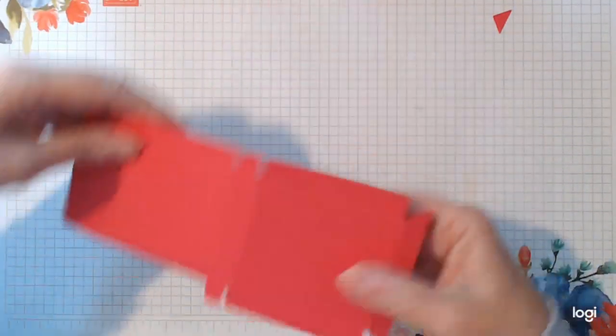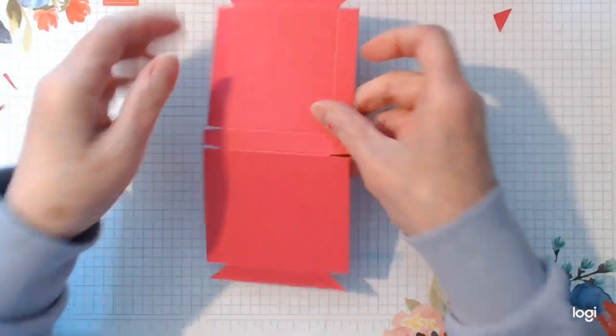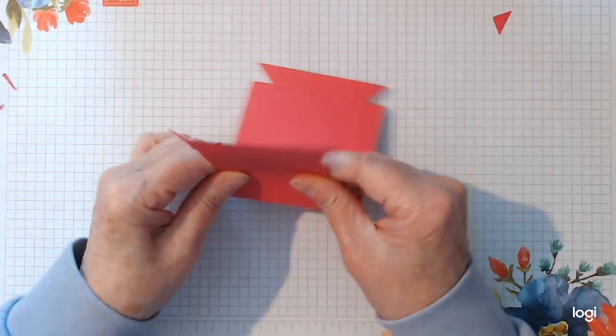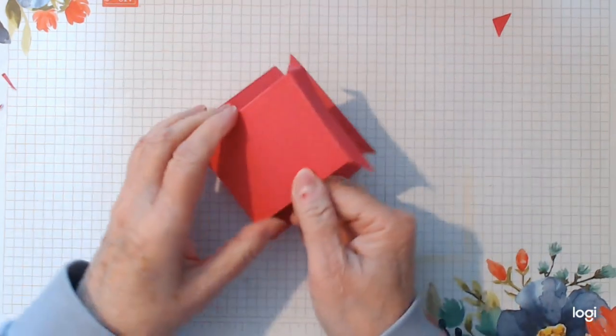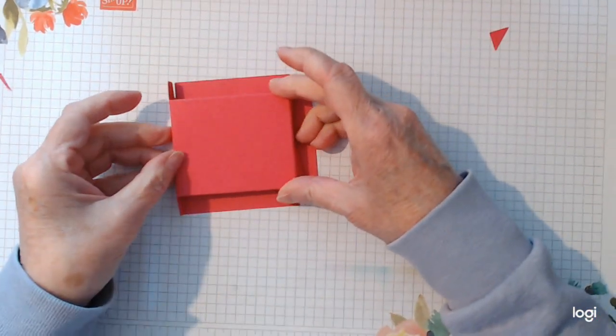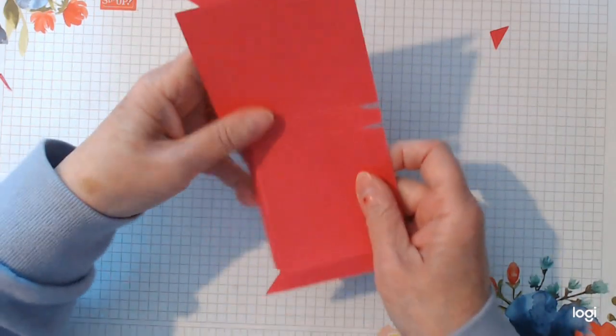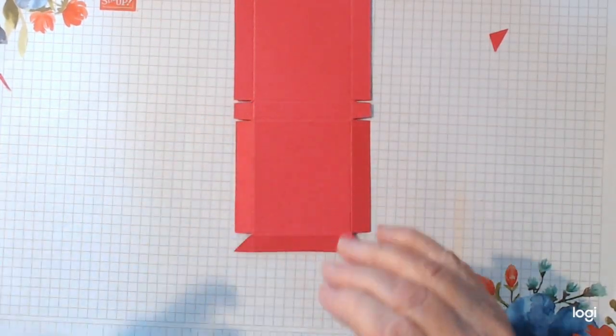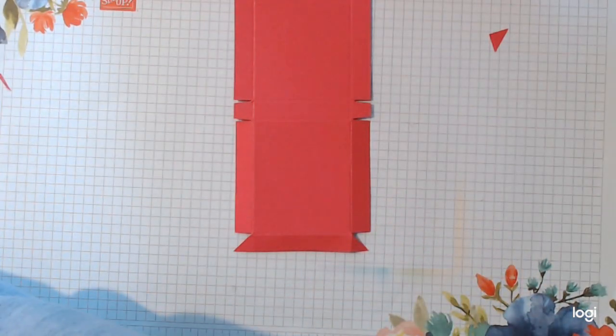And then we're going to decorate it. So you just decide which one is going to be your front. This one should close down on top of this one. So this is my top layer. So I have got all my bits and pieces cut for decorating this.